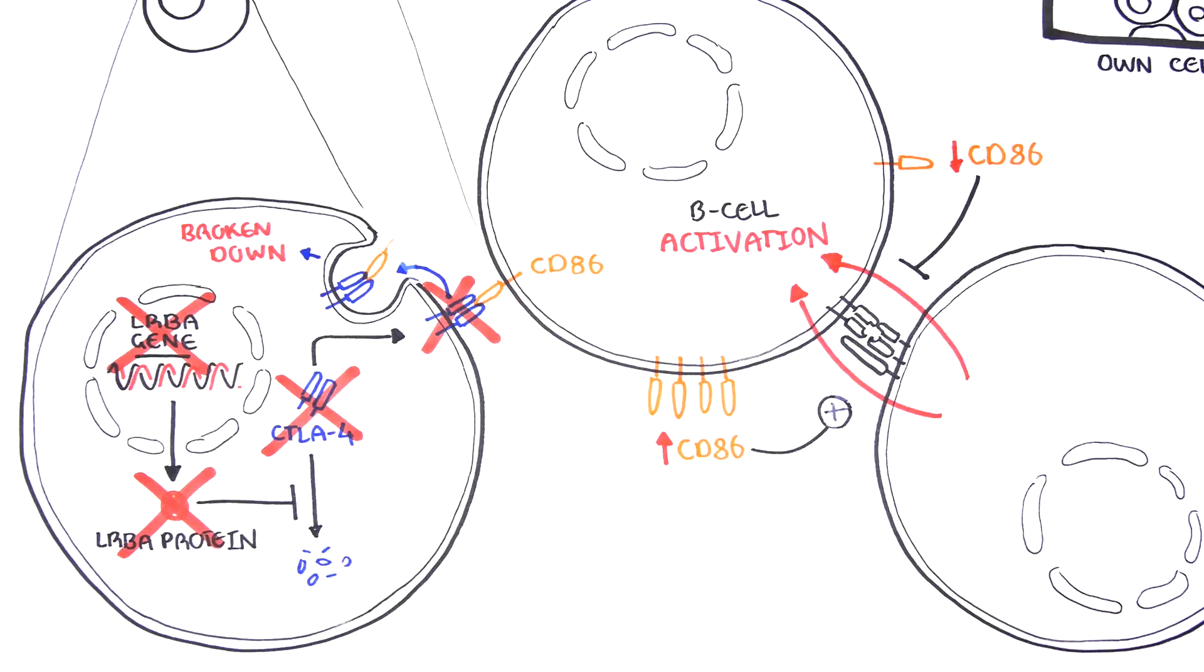This means that when a regulatory T cell bumps into a B cell programmed against the body, it has no way of stepping on the brake. As a result, CD86 builds up, signaling T cells to activate these abnormal B cells, which then produce antibodies that will harm our body.